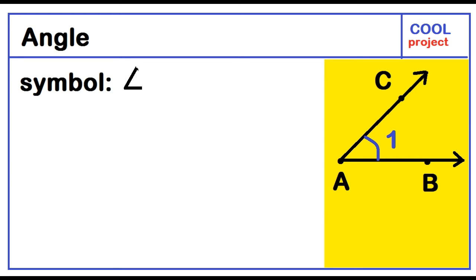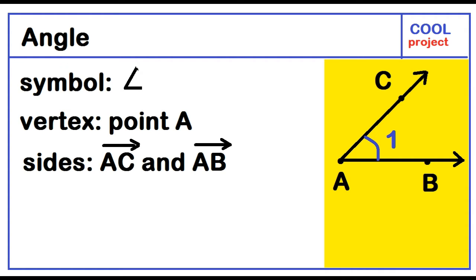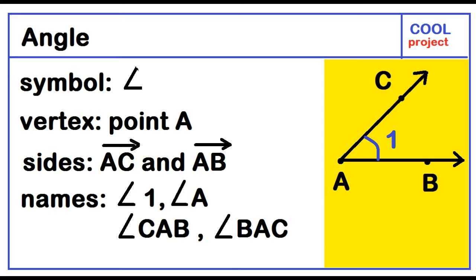This symbol represents an angle. The vertex is point A. The sides are ray AC and ray AB. It can be named as angle 1, angle A, angle CAB, or angle BAC.